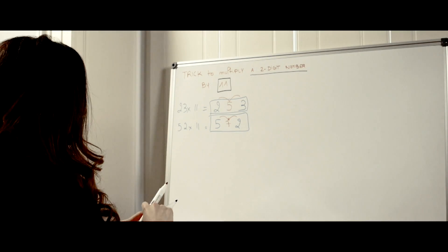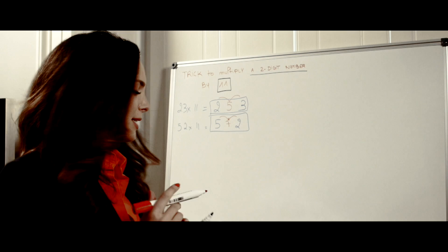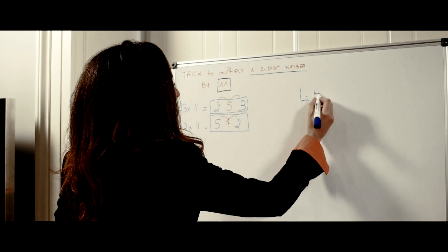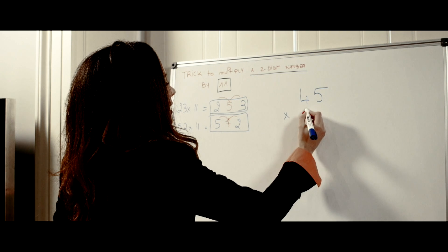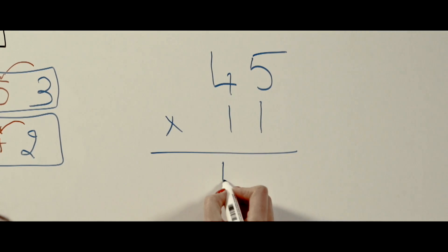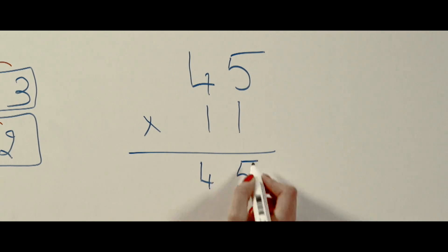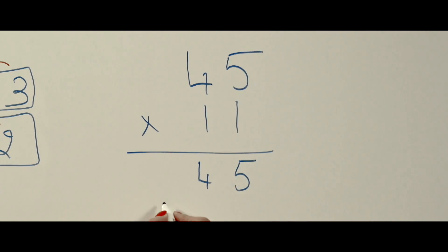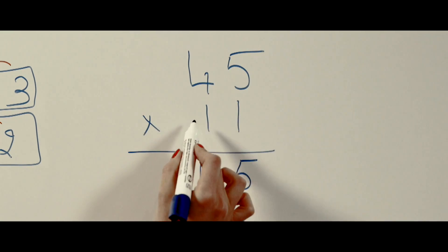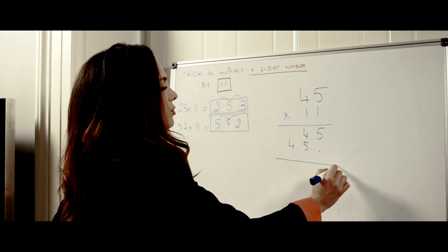So let me just show you quickly why so you'll visualize the reason. Let's say we do 45 times 11. What would happen in reality? So you would do 45 here. Then you would put a point and you would do again 45 because it's 45 times 1 is 45 and then 45 again times 1 is 45.